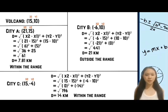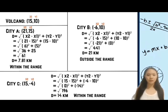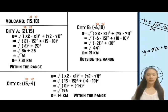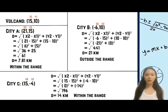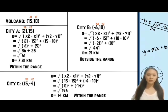For City B, let's assume its coordinates are (20, 8). Using the distance formula: D = √[(20 - 15)² + (8 - 10)²] = √[5² + (-2)²] = √[25 + 4] = √29 = 5.39 kilometers. Since the distance between City B and the center is less than 14 kilometers, City B is outside the range of the volcano.